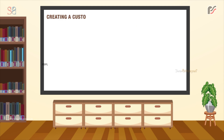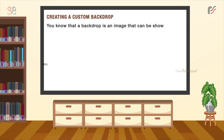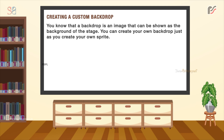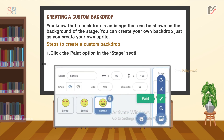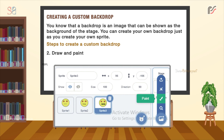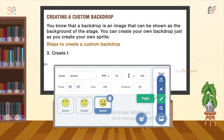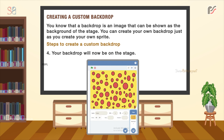Moving on to creating a custom backdrop. A backdrop is an image that can be shown as the background of the stage. You can create your own backdrop just as you create your own sprite. Steps to create a custom backdrop are: click the Paint option in the stage section to open the Scratch paint editor. Then draw and paint your own backdrop using the drawing and painting tools, and create the backdrop using the circle and fill tool. Your backdrop will now be on the stage.